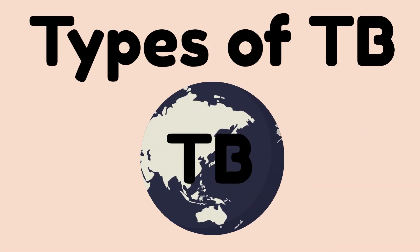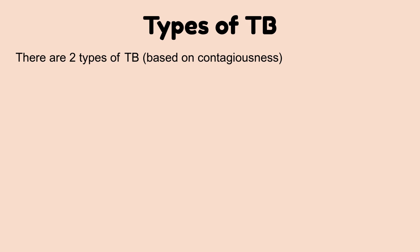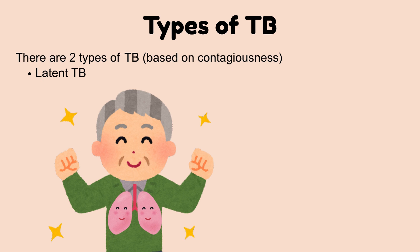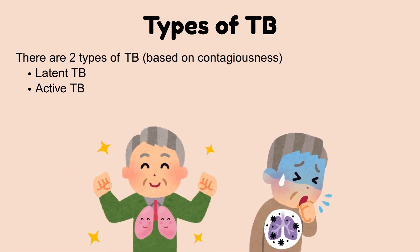What are the types of TB? There are two types of TB based on the contagiousness of the disease: latent TB and active TB. Let's discuss them one by one.